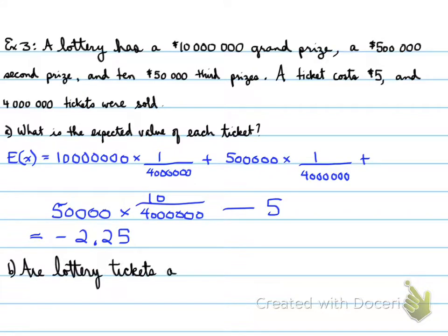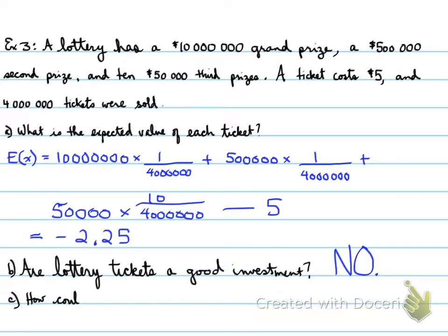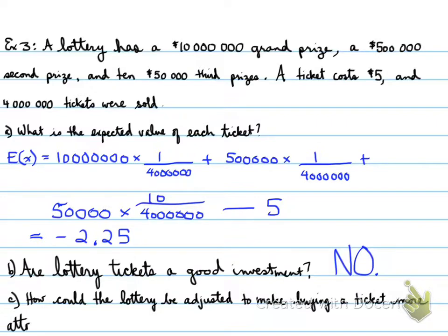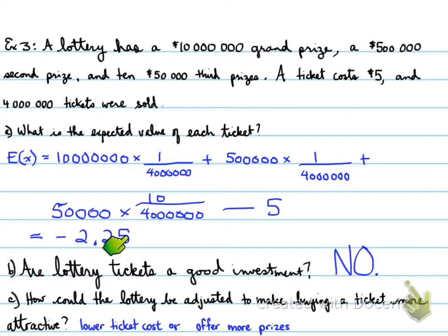Are lottery tickets a good investment? The answer is no — there's no question about it. How could the lottery be adjusted to be more attractive? They could lower ticket prices or offer more prizes. But the bottom line is the company wants to make money — they're making $2.25 off every ticket based on the prizes and cost.